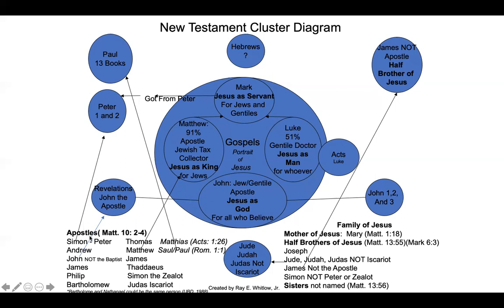Now let's talk about the apostles of Jesus Christ and then the family members of Jesus Christ, because a lot of these names are similar — and that's where a lot of the confusion comes in. The apostles are listed in Matthew chapter 10, verses 2 through 4. We have Simon, who Jesus later renamed Peter, and as I already discussed, Mark got his gospel primarily from Peter.